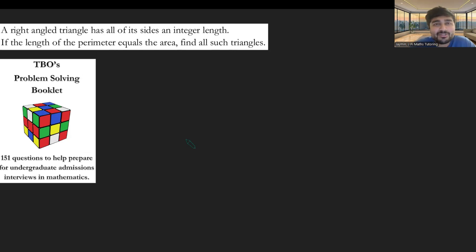Today I've got a problem from TBO's problem-solving booklet. We have a right-angled triangle which has all of its side lengths as integers. If the length of the perimeter equals the area, find all such triangles.